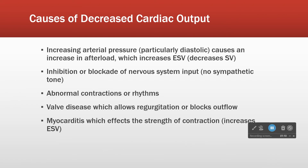What about things that decrease cardiac output? Increasing arterial pressure, particularly diastolic pressure — that's the afterload component. As diastolic blood pressure increases, it's harder for the heart to push the valve open, so we get an increase in ESV, which leads to a decrease in stroke volume and cardiac output. Blockade of nervous system input: the sympathetic nervous system stimulates heart rate and contractility, so if we knock it out, we get a decrease in cardiac output due to decreased heart rate and contractility. We need the sympathetic nervous system to have optimal cardiac efficiency.